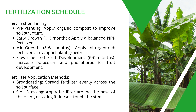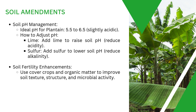For the fertilization schedule: before planting, apply organic compost to improve soil structure. At the early stage, apply a balanced NPK. From three to six months, focus on nitrogen-rich fertilizers for growth. At flowering, potassium and phosphorus become important for fruit development. For application methods, use side dressing at the base of plants without touching the stem, or broadcasting evenly on the soil surface. Side dressing is preferable as broadcasting risks touching the stem.